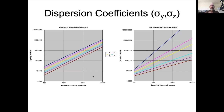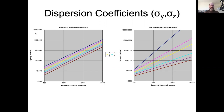Here's what those coefficients look like plotted up. We'll start with the horizontal dispersion because it's the simpler of the two. There's some downwind distance here in meters on a log scale, and here's our sigma, which is the standard deviation of the amount of lateral diffusion or dispersion, also on a log scale. This is what's described as a power law relationship, so sigma is going to be x raised to some power. We'll see that there's actually a bunch of parallel lines.